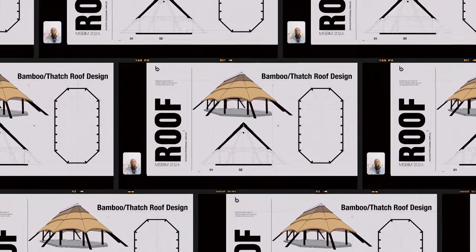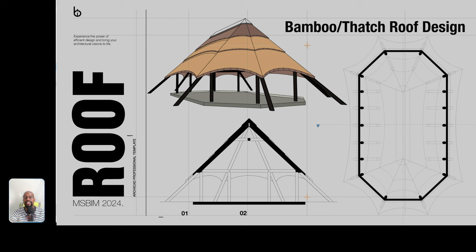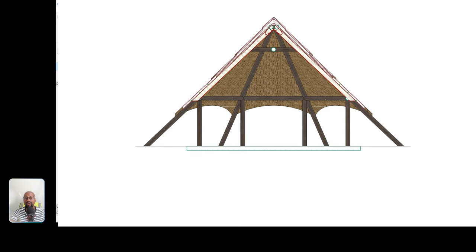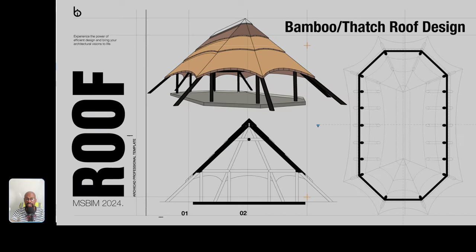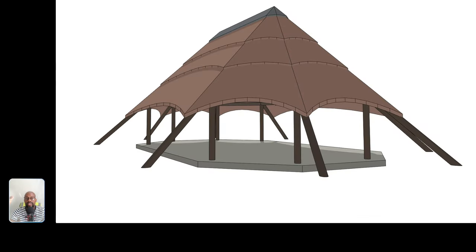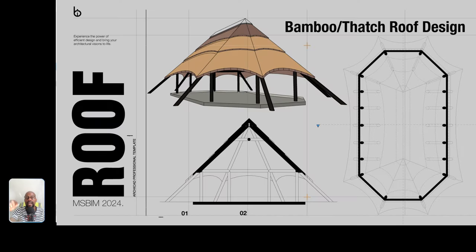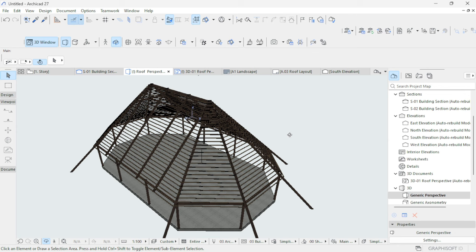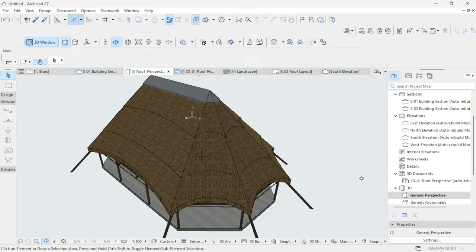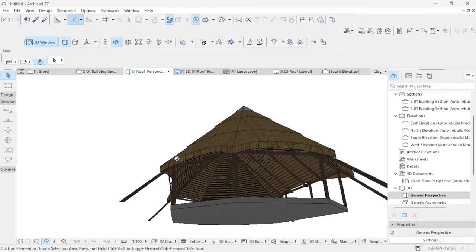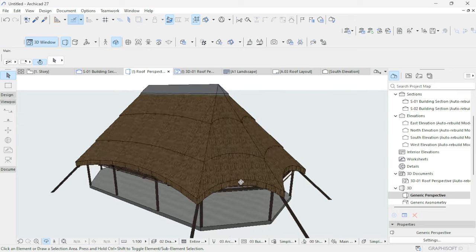Hello, welcome to another Mesolite visual tutorial. I'm Dominic, and in this video we're going to create a traditional thatch roof or bamboo roof design in ArchiCAD. It's one of the most commonly used roof designs in my region, requested by a WhatsApp community member. Join the community via the link in the description, and thank you to our patrons — check the link to access resources. Let's jump straight into ArchiCAD.